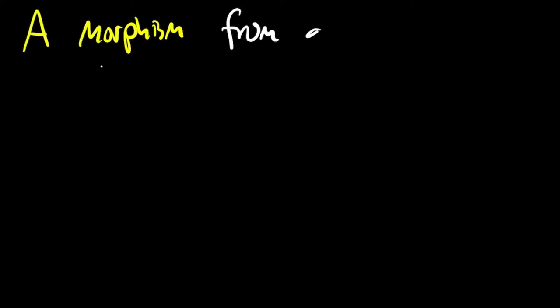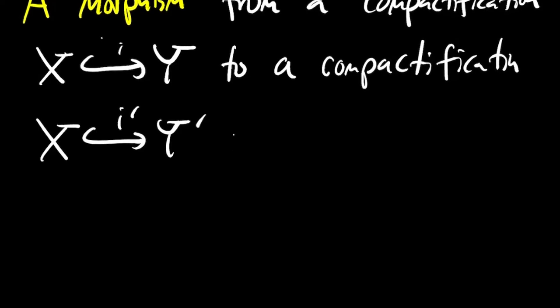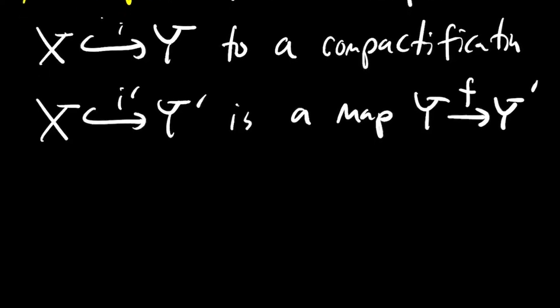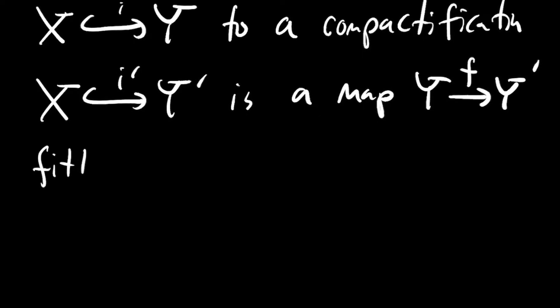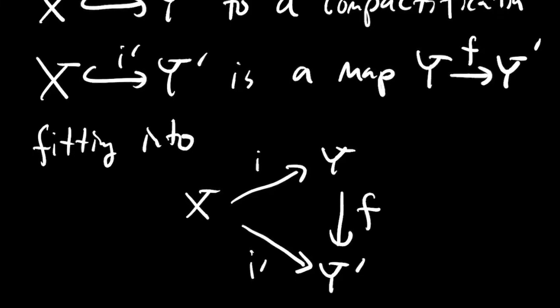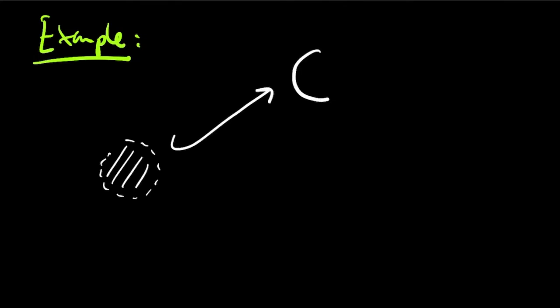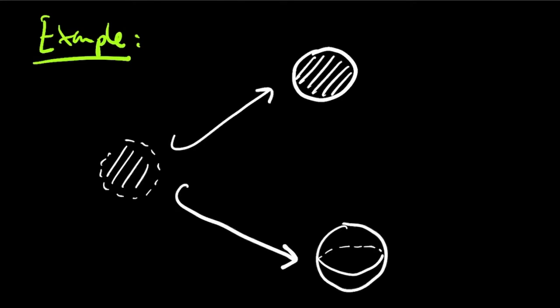Now you can make a category out of compactifications of a space X. A morphism between two compactifications — i from X to Y and i' from X to Y' — is a map from Y to Y' that commutes with the embeddings. For example, the map from the closed disk to the sphere obtained by identifying the boundary to one point is an example of a morphism between these two compactifications.